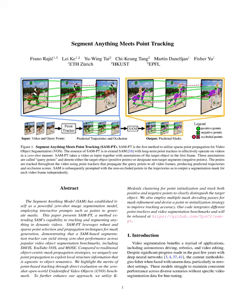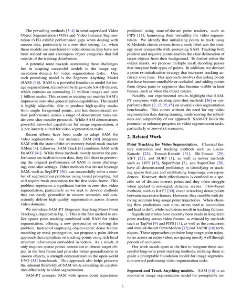Video segmentation—dividing video content into segments based on object recognition—plays a key role in applications such as autonomous driving, robotics, and video editing. Despite notable advances in recent years, particularly through deep neural networks, current techniques often struggle with unfamiliar data, especially in zero-shot settings where models must handle videos or object categories they weren't trained on. Semi-supervised video object segmentation and video instance segmentation methods also suffer from performance issues with such data.